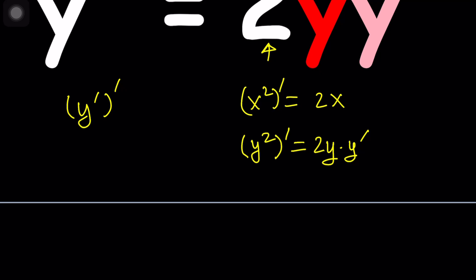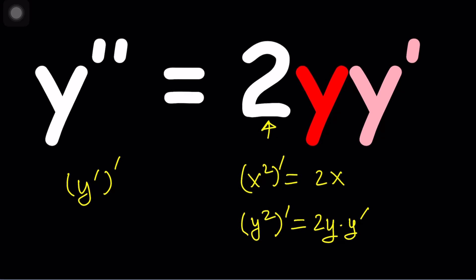That would be y prime. Now, does that look like our expression? Absolutely. This is exactly what we have. So now we can go ahead and write the right-hand side as the derivative of y squared.